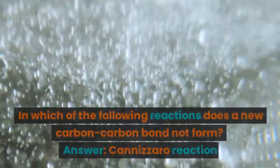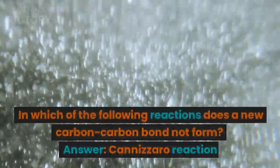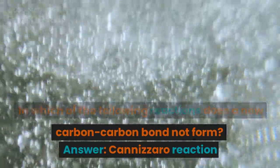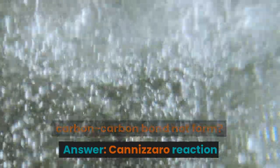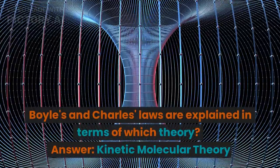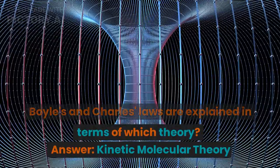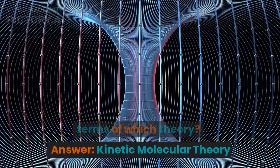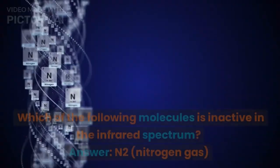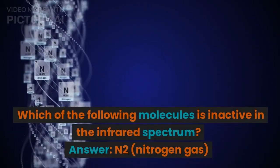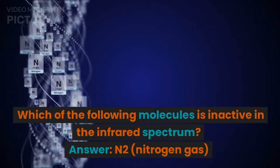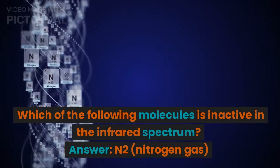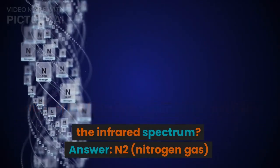In which of the following reactions does a new carbon-carbon bond not form? Answer: Cannizzaro reaction. Boyles and Charles laws are explained in terms of which theory? Answer: kinetic molecular theory. Which of the following molecules is inactive in the infrared spectrum? Answer: N2, nitrogen gas.